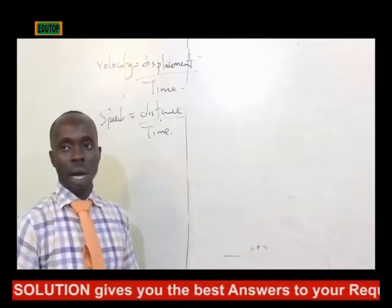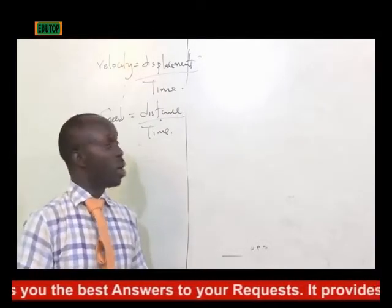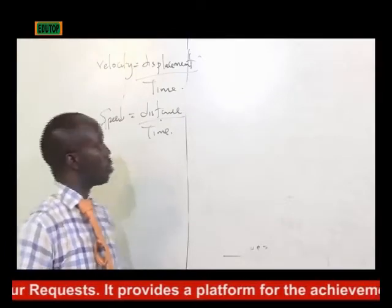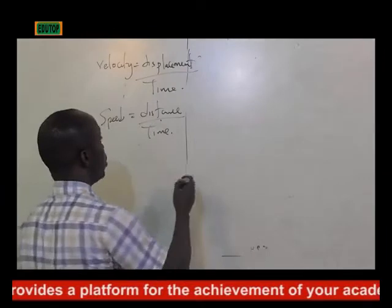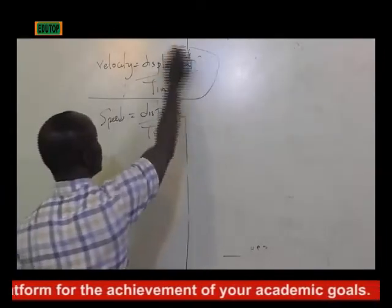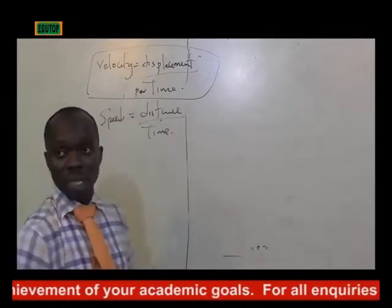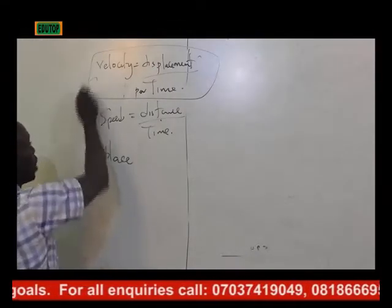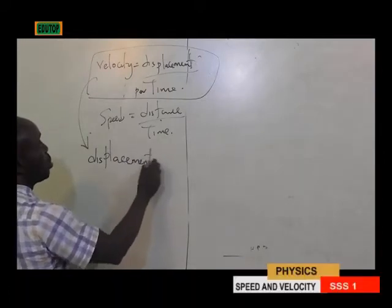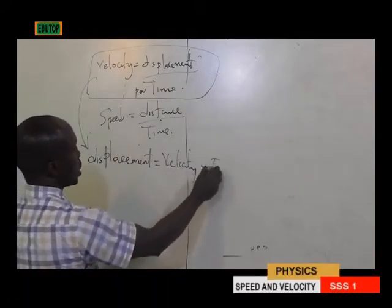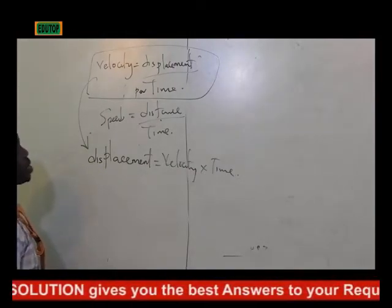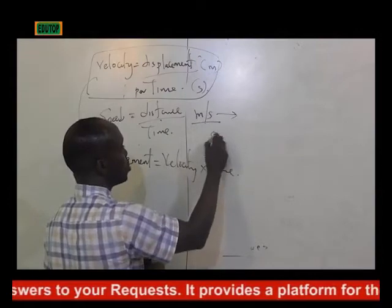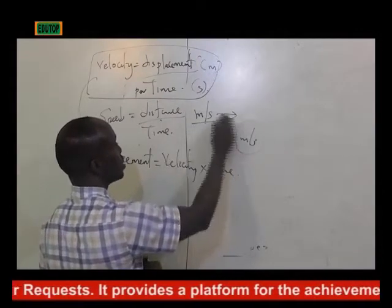From the graph, you have a velocity-time graph, which is drawn almost the same way. Velocity equals displacement per unit time. To calculate displacement: displacement equals velocity times time. Displacement is in meters, time is in seconds, so velocity is in meters per second — the same unit as speed, but a different definition.